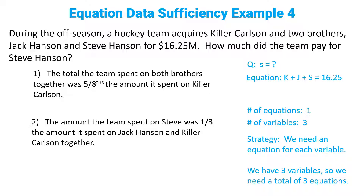Statement one: the total the team spent on both brothers together was 5/8 the amount it spent on Killer Carlson. We always translate things out of English and into math — that means J plus S equals 5/8 K. We needed two more equations but we only got one more equation, so that is insufficient.